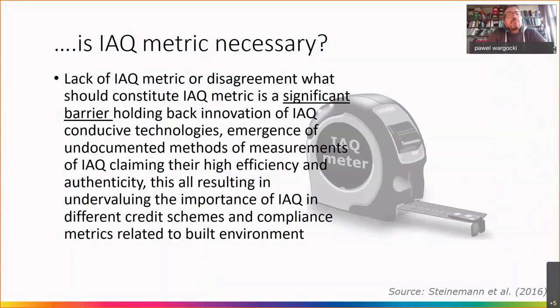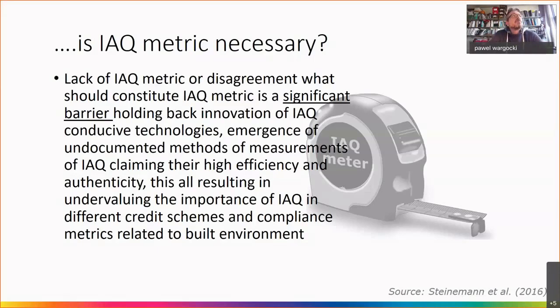I would like to round up the two earlier presentations with two slides very quickly on IQ metric. One slide is a quote from a paper that I had the pleasure to be a co-author on, published in 2016 in Building and Environment, which looked at the effects of green buildings on indoor air quality. In this paper, we actually consider the importance of IQ metric. We wrote that the lack of IQ metric, or disagreement on what should constitute IQ metric, is a significant barrier.